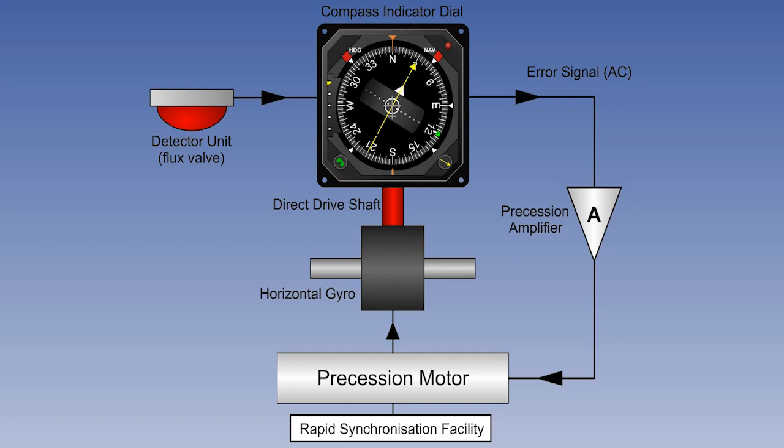This concludes the lesson on the flux valve. The next one will look at the remaining components of the gyromagnetic compass, and also how magnetic heading is transmitted to other instruments.